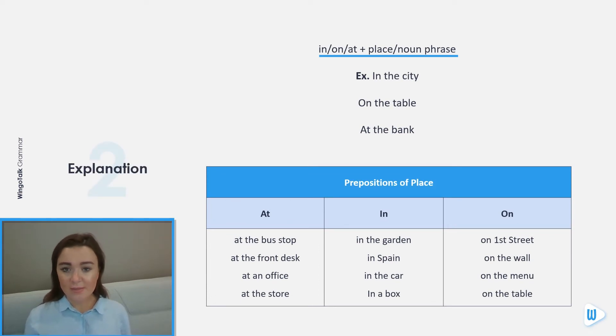In, on, at plus place or noun phrase. For example, in the city, on the table, or at the bank. For at, we could say at the bus stop, at the front desk, at an office, or at the store. In: in the garden, in Spain, in the car, or in a box. On: on First Street, on the wall, on the menu, or on the table.